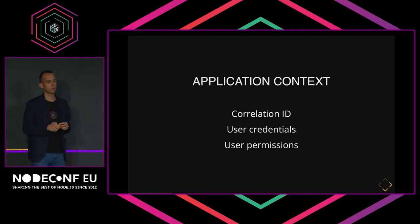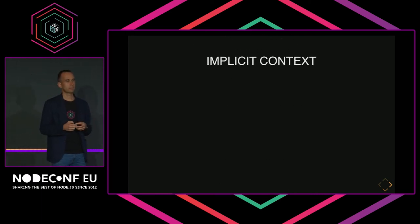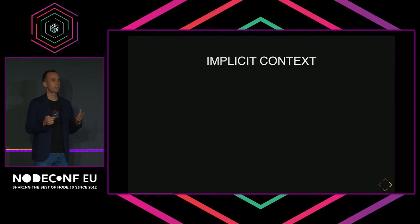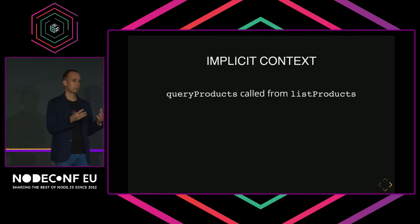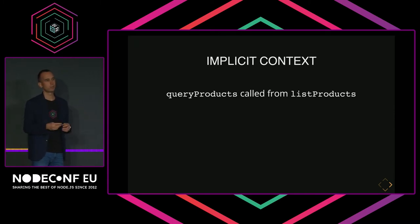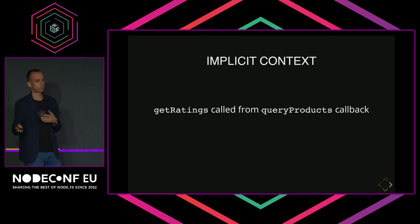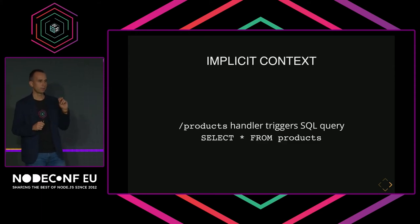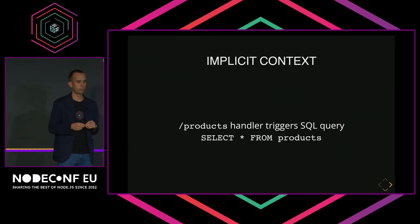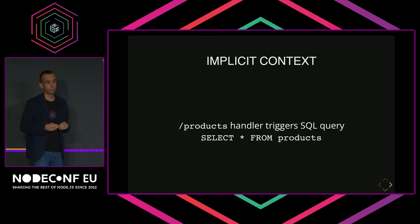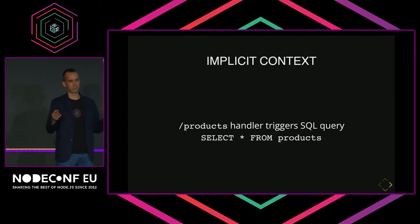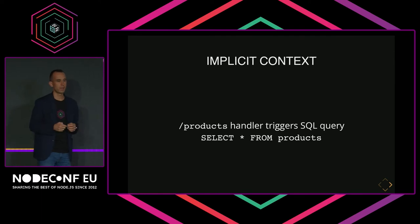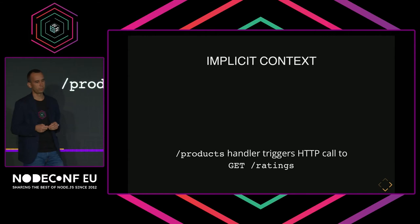This is kind of the high-level context visible in your code, but there is also what I call implicit context — things which are not so visible but are important as well. For example, the fact that our query products function was called from list products: you can see it when you read the code, but at runtime it's not so clear because there are asynchronous operations involved. Similarly, getRatings was called from the query products callback. And going further, there is also the interesting information that the GET products handler triggered the SQL query SELECT all FROM products — which, if you ever troubleshoot performance issues in production, you probably see a problem there. It's useful to know this query was called from your slash products handler, because it makes it easier to find the place in your code to fix it. The same API handler also triggered an HTTP call to your backend microservice.